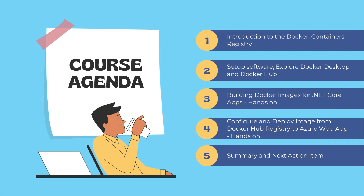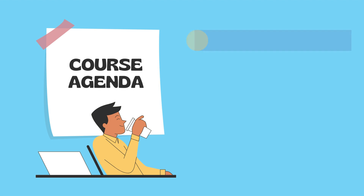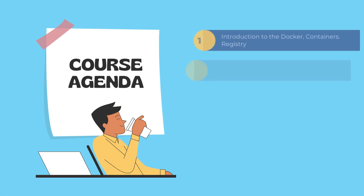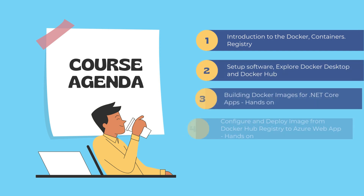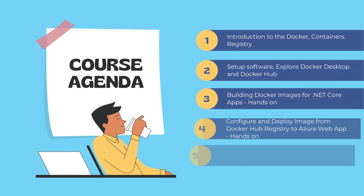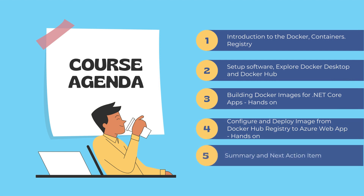We will explore Docker Desktop and Docker Hub, and we'll also be creating an account in Docker Hub if you don't already have one. Then we will start building Docker images for the .NET Core Web API, and as a bonus I'll show you how to do it for an Angular 16 application. This will be a complete hands-on experience, followed by configuring and deploying the image from Docker Hub registry to Azure Web App.